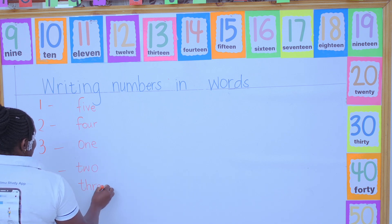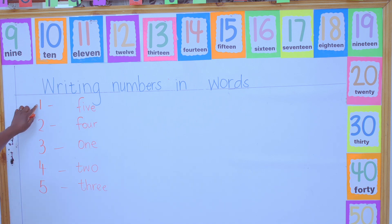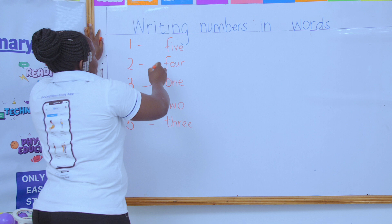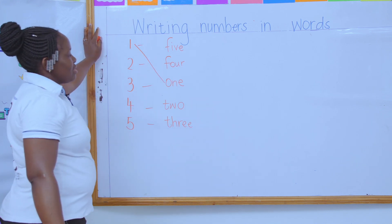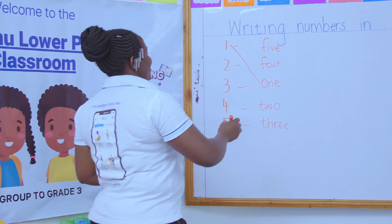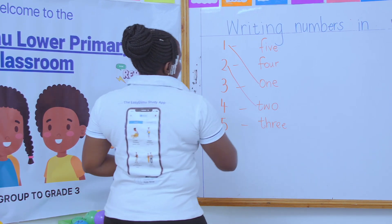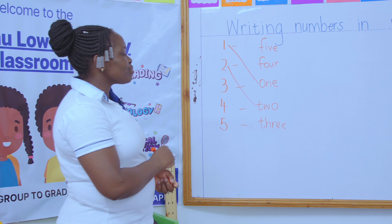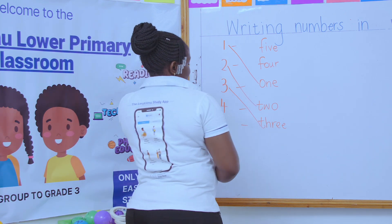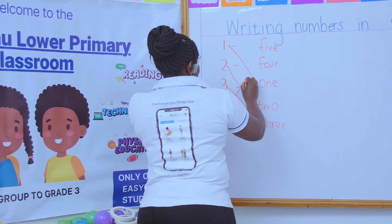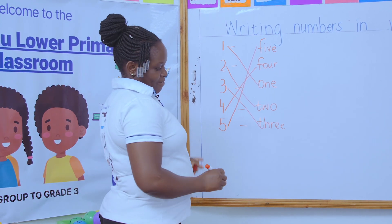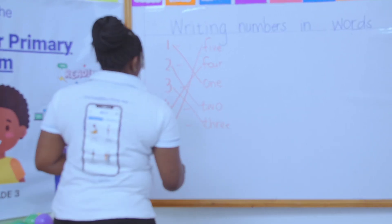For example, the first number is one, so I match it to the word 'one.' The second one is two, so two goes with the word 'two.' Three matches with the word 'three,' four matches with 'four,' and five matches with 'five.'